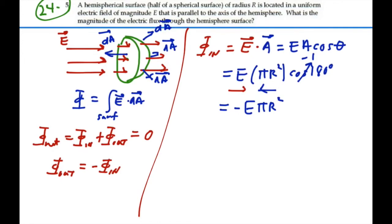Well, we want the outflux, so our outflux is the negative of the influx. So this would be a negative negative E pi R squared. So this is going to be E times pi R squared.